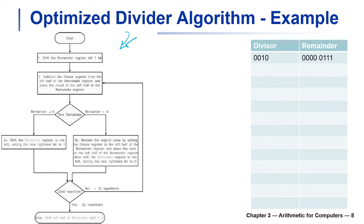Here is an example of how this works. The dividend is seven and the divisor is two, which should give us a quotient of three and a remainder of one. The algorithm repeats four times in this case because we're dealing with four bits — on a MIPS register it would repeat 32 times. This is different from the original circuit which ran n+1 times. The first step is to shift the remainder register left by one bit.